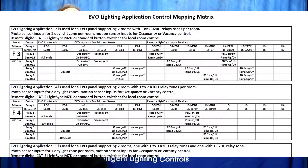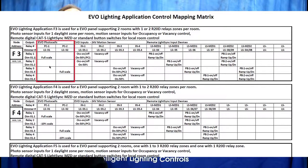Let's review lighting application 3. In this application we are using both photo sensor inputs for daylight harvesting. The first photo sensor input controls dimmer 1 as the daylighting zone in the first room, and the second photo sensor input controls dimmer 3 as the daylighting zone in the second room.